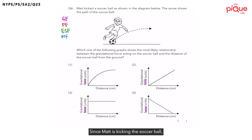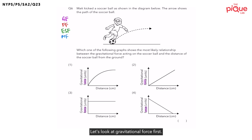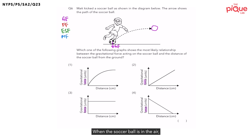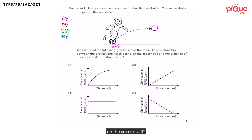Since Matt is kicking the soccer ball, let us label the forces on the soccer ball. Let's look at gravitational force first. We know that gravitational force always acts downwards towards the earth, so I'm going to label the arrow downwards. Now let us draw the soccer ball that is in the air. When the soccer ball is in the air, will there be any gravitational force acting on it? Yes, and in which direction? We know that it is downwards as well.